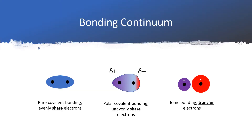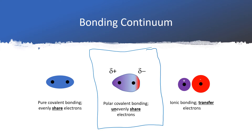Before we can determine if a molecule is polar, we have to determine if the bonds contained inside that molecule are polar or not. I want to review this slide from earlier in the chapter where we talked about pure covalent, polar covalent, and ionic bonding. We want to focus on polar bonding, which happens when you have two different nonmetals bonded to each other. There's a difference in electronegativity between the atoms, so one atom pulls on the electrons more strongly than the other, and those electrons get shifted over to one side.